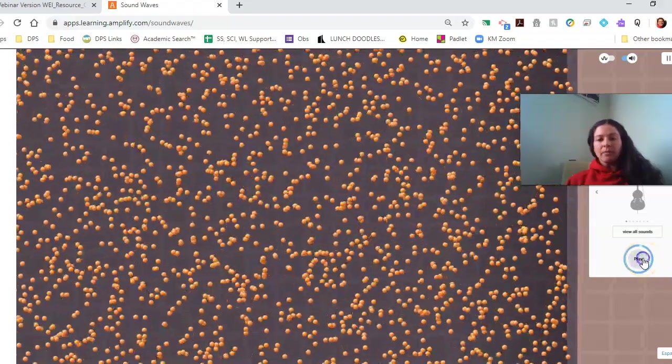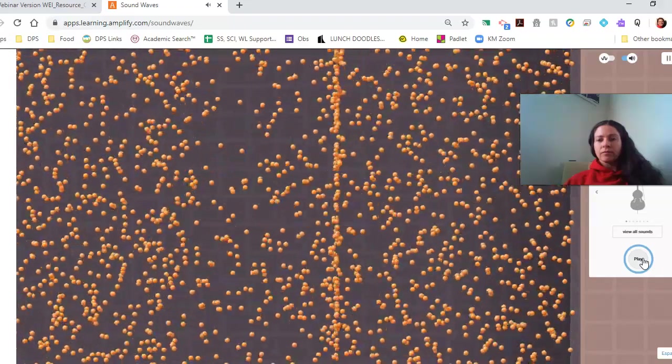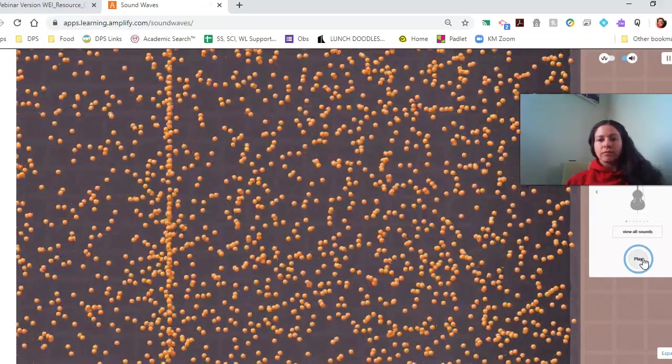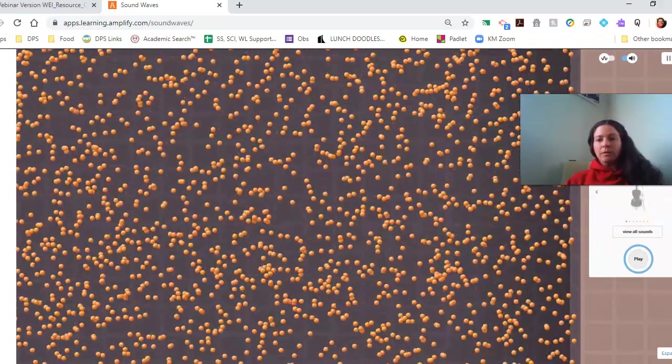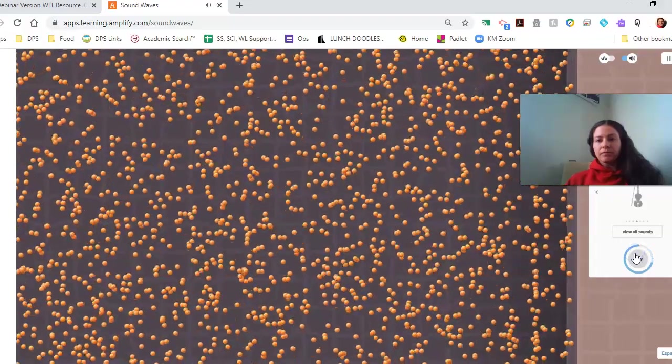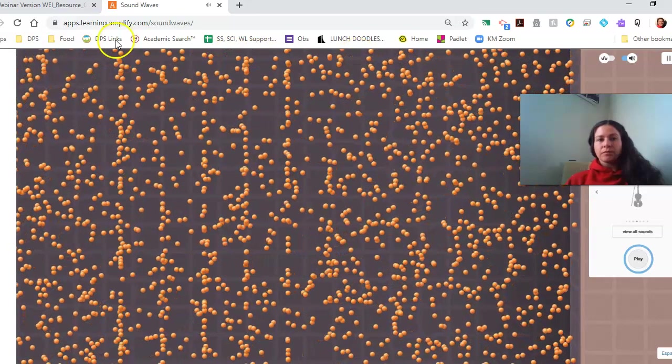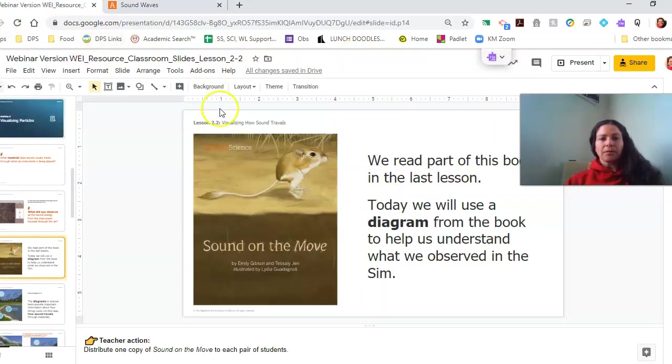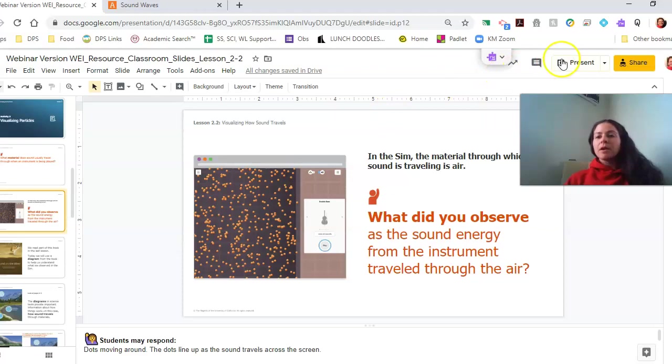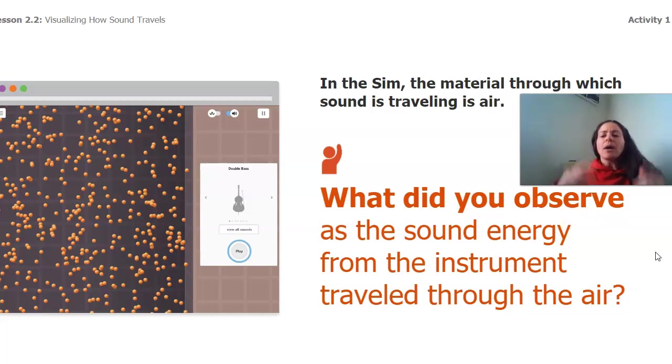We're going to do one more example. We're going to play that one more time. We'll do that once more with our violin again. Okay. And so our question is, what did you observe as the sound energy from the instrument traveled through the air? I want you to think about that while we do a little bit more reading.